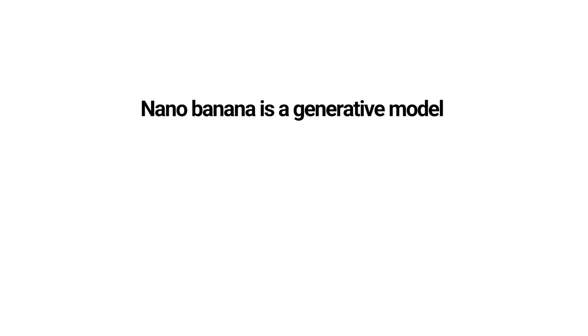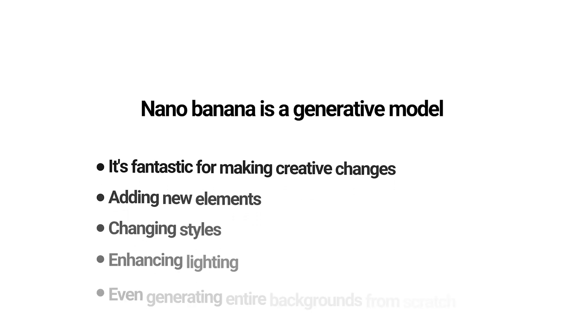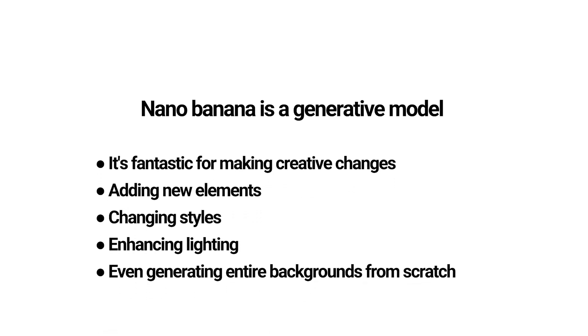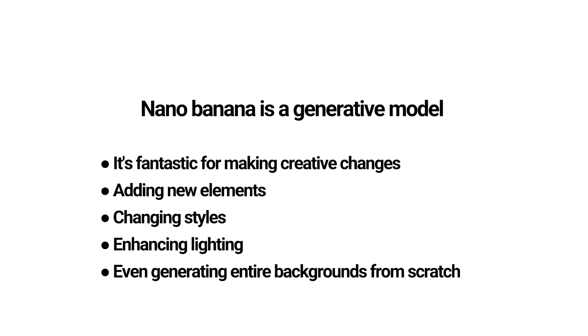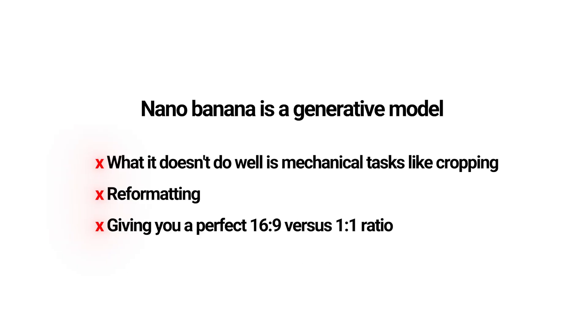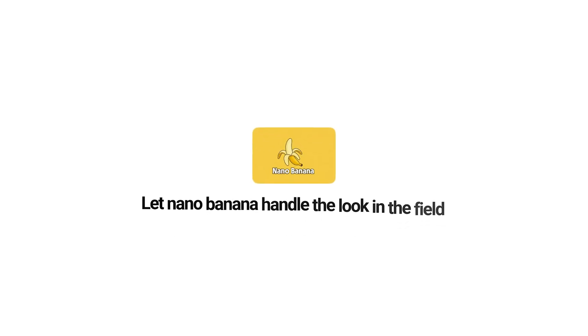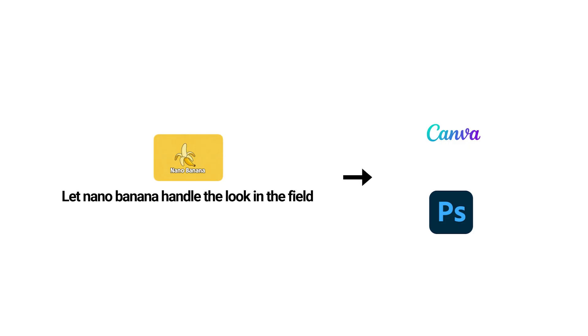And here's an important note. Nano Banana is a generative model. It's fantastic for making creative changes, adding new elements, changing styles, enhancing lighting, even generating entire backgrounds from scratch. What it doesn't do well is mechanical tasks like cropping, reformatting, or giving you a perfect 16:9 versus 1:1 ratio. I found myself re-prompting from new chats quite often to get the aspect ratio correct. So here's the workflow: let Nano Banana handle the look and the feel, then pass it through Canva or Photoshop for perfect sizing. That way you get the best of both worlds — creativity and precision.